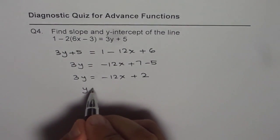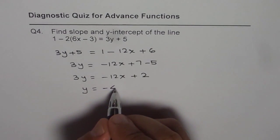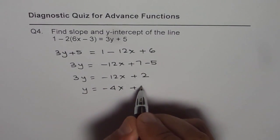Now we can divide by 3, so we get minus 12 divided by 3 is minus 4 plus 2 over 3, right?